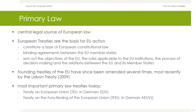The founding treaties of the European Communities have since been amended several times, most recently by the Lisbon Treaty in 2009. Under the treaties, the European Union institutions can adopt legislation that the member states subsequently implement. Primary law also regulates which institutions participate in decisions and how. The most important primary law treaties today are the Treaty on European Union (TEU) and the Treaty on the Functioning of the European Union (TFEU).